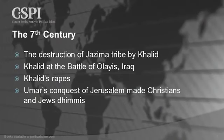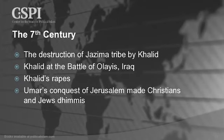Muhammad sent Khalid, the Sword of Allah, to the Jazeema tribe to offer them an invitation to come to Islam. They declined, so he destroyed them down to the last man, woman, and child. Then at the Battle of Olayis in Iraq, after the battle was over, Khalid brought forth the surviving chieftain and his wife, cut off the chieftain's head, soaked the blood, then raped the wife on top of the blood of her husband. We will study the doctrine of jihad, which includes the doctrine of rape.